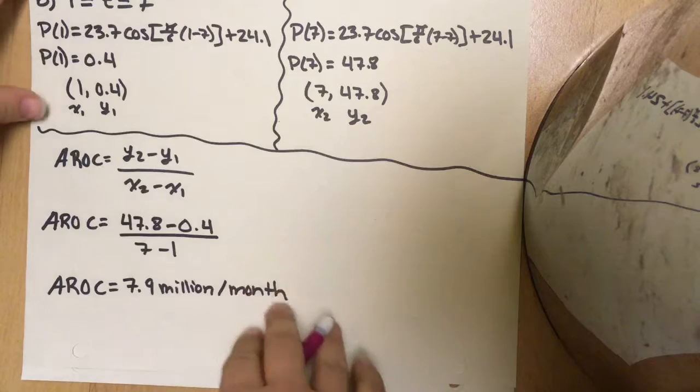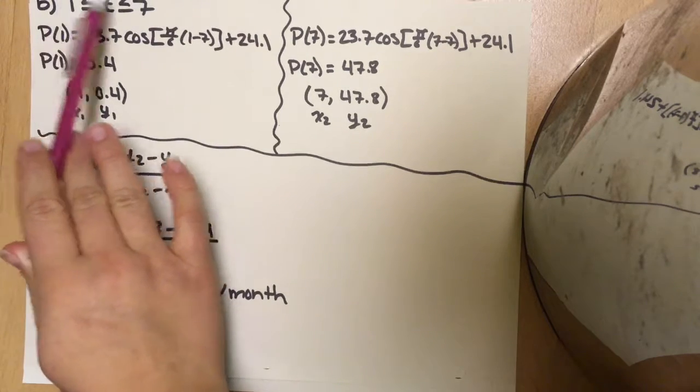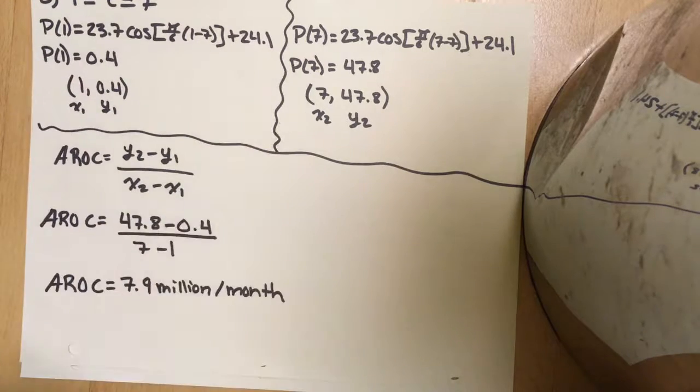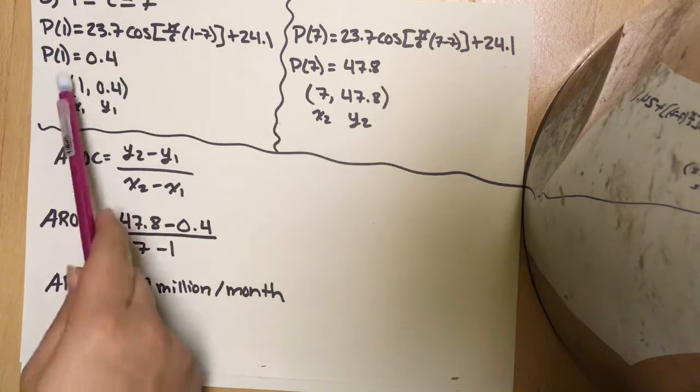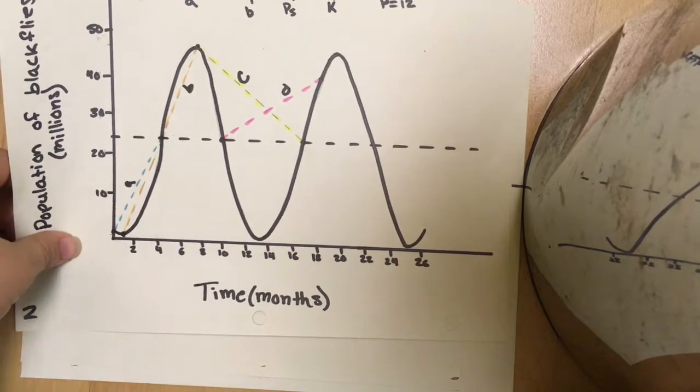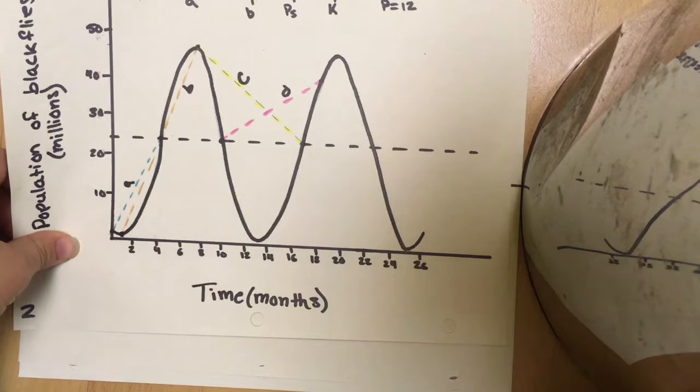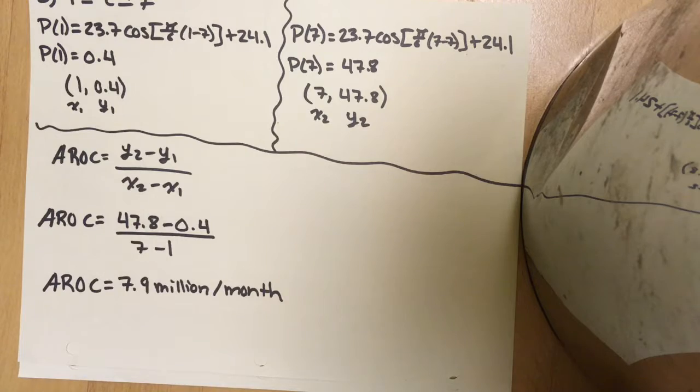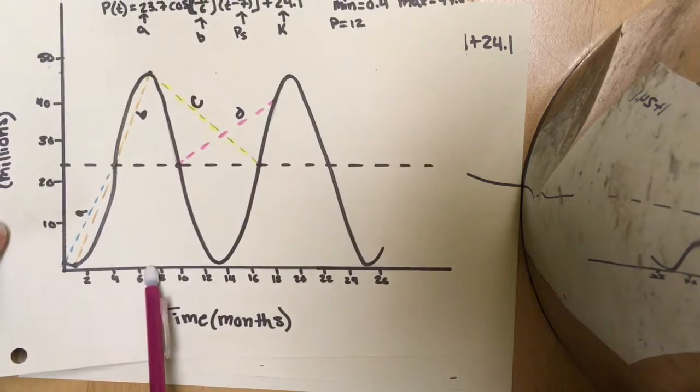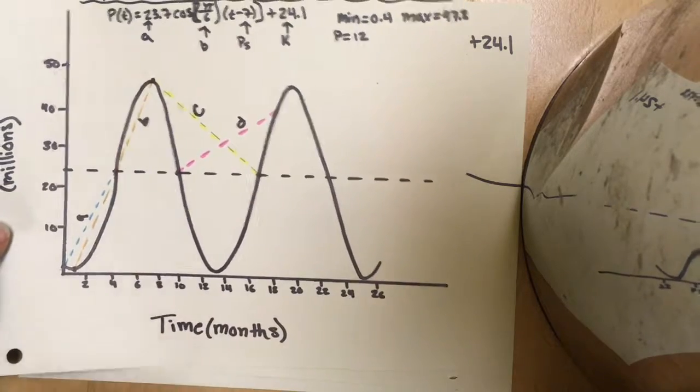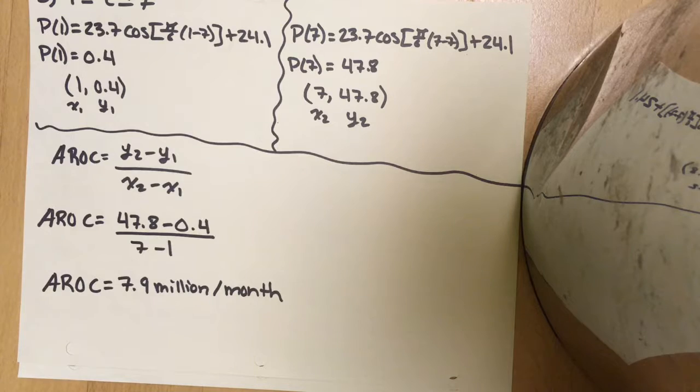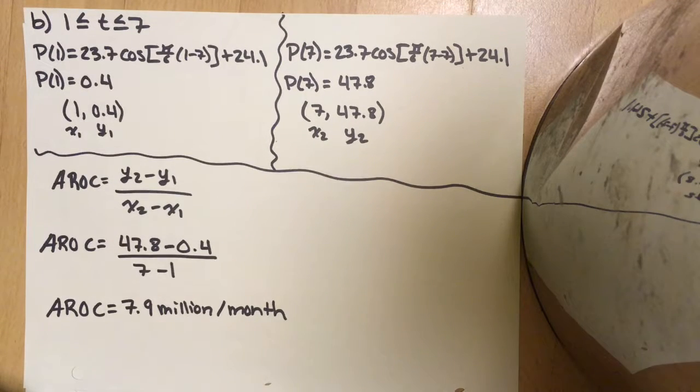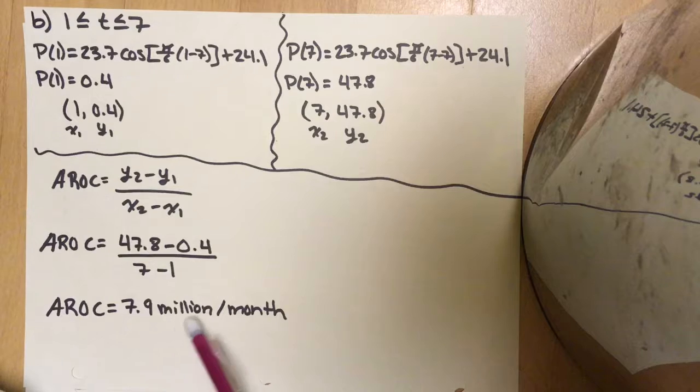Next, I'm going to calculate B, which is from 1 month until 7 months. If we refer to the graph, 1 is at our very lowest point, and we know our minimum value is 0.4. I did calculate it just to make sure. At 7, it's at our max value, 47.8. I calculated it to be 47.8. For a lot of these, we can look to our graph. Then we calculate the slope. 7.9 million per month.